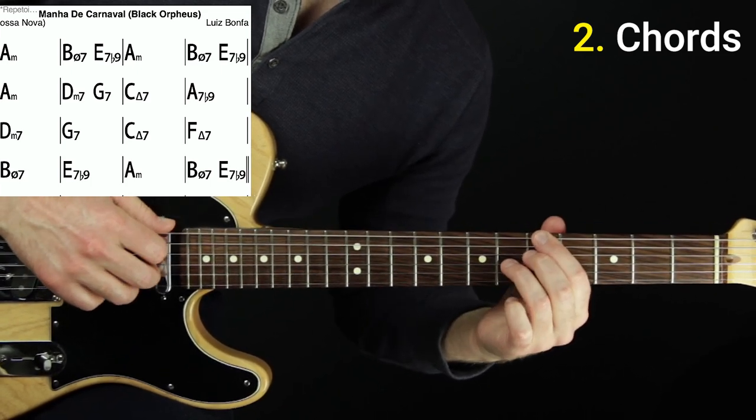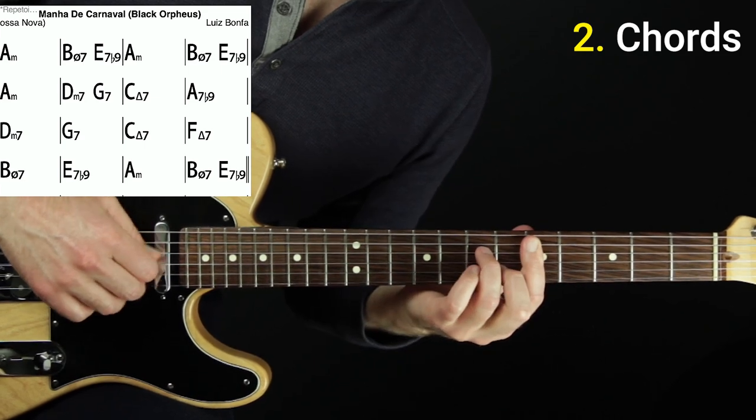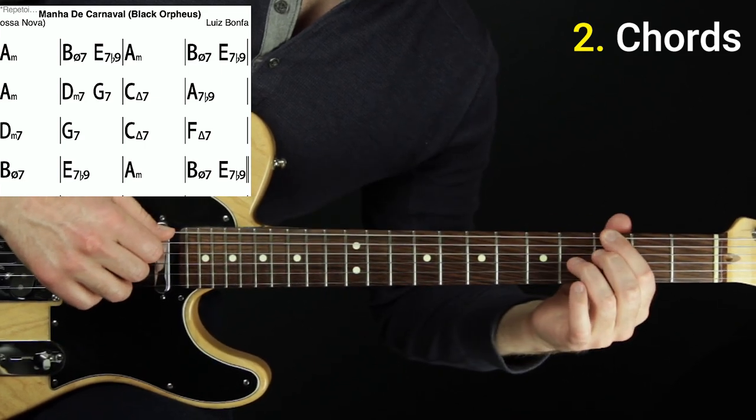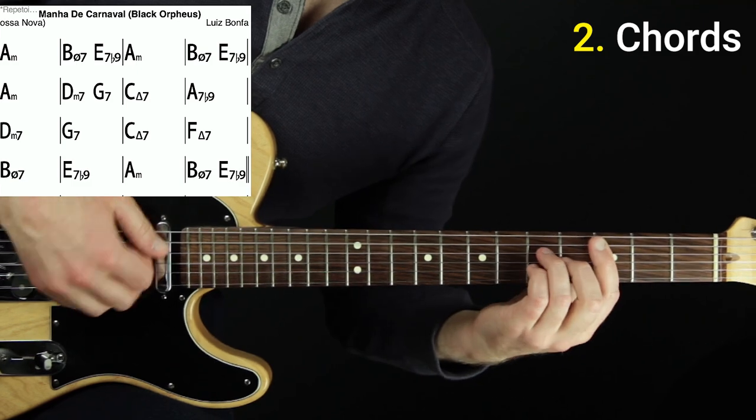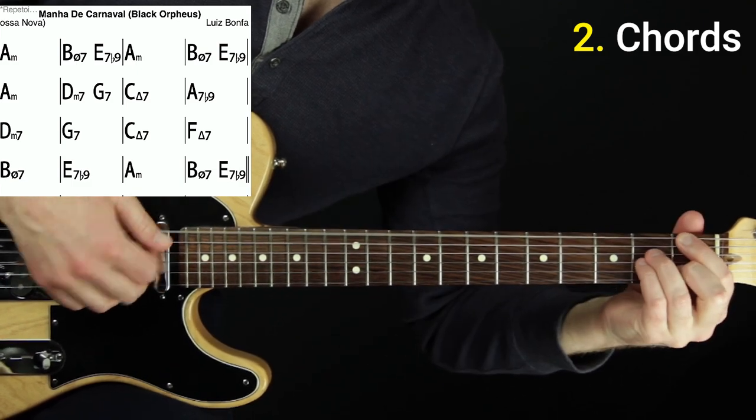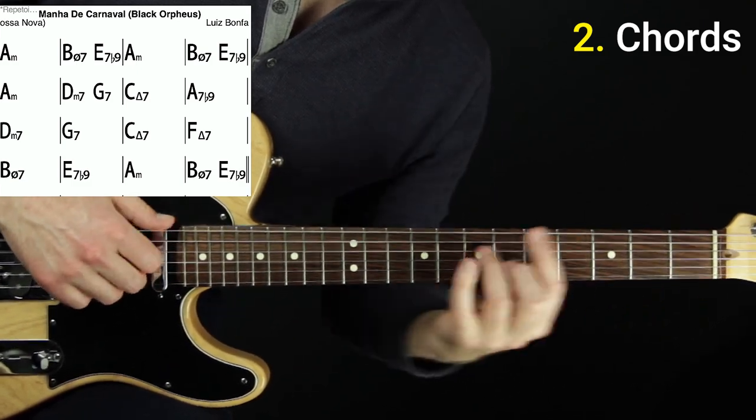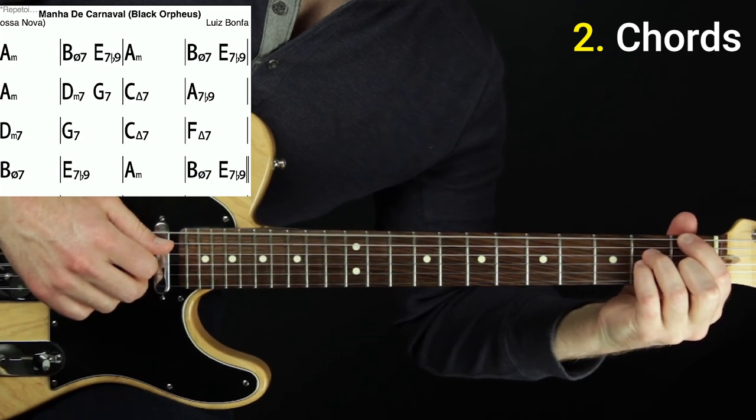And now 2-5 to C major. Then A7 leading to D minor. This is 2. G7. C major. F major 7. That's 2-5-1-4. In C.